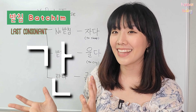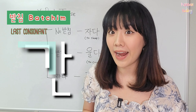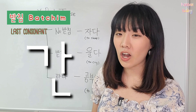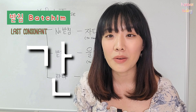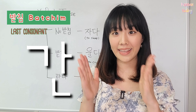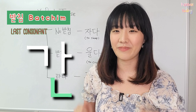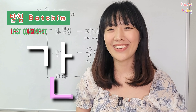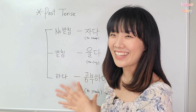It's 간. This is the first consonant, and then this is the last consonant. The last consonant is called 받침. 받침 — you got it? So let's move on to the examples.